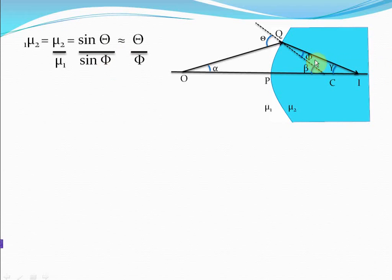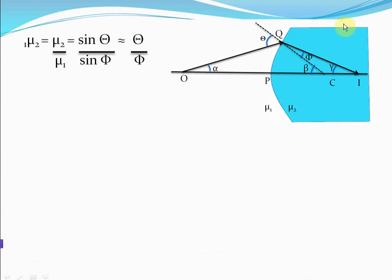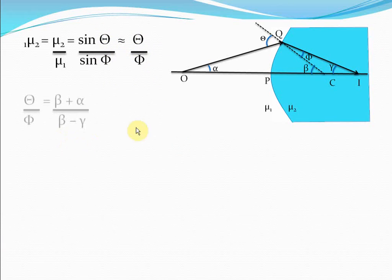If theta and phi are very small — that is, this incident ray is making a very small angle with the normal at the point of contact, almost perpendicular to the spherical surface — then sin theta can be approximately taken to be theta, and sin phi will become phi. We already know that theta here is equal to beta plus alpha.